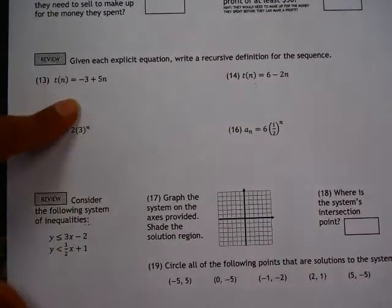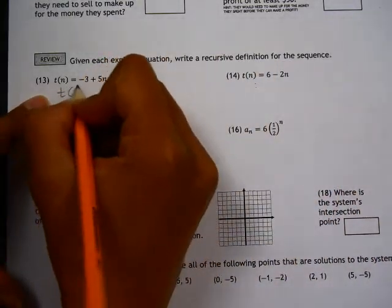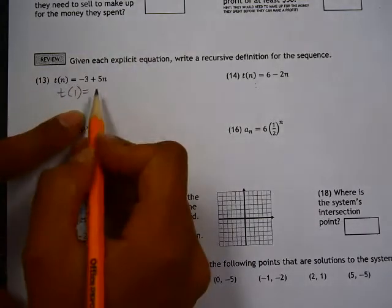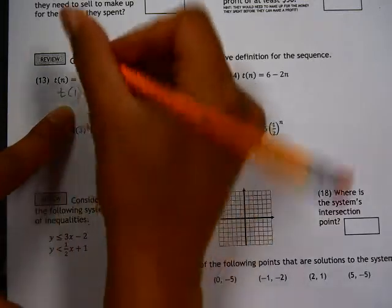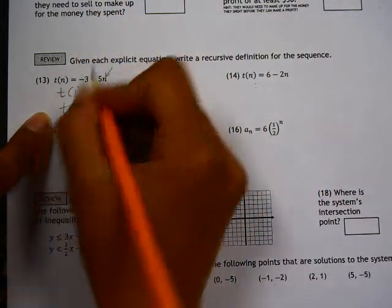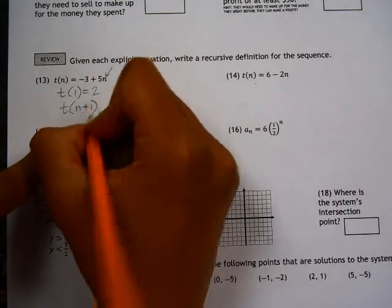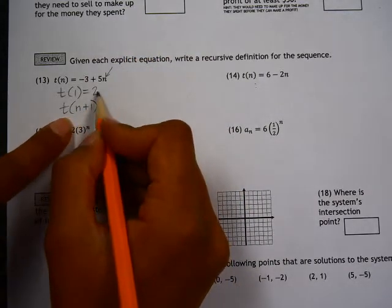Our recursive definition has a couple parts. We need to give the first term of the sequence, which we can find by just substituting n equals 1. So negative 3 plus 5 times 1 is 2. The recursive definition should tell us how to find the next term in the sequence given that we know this term.